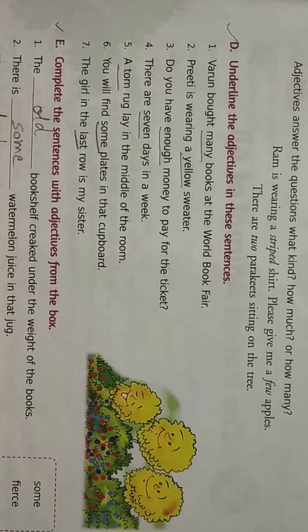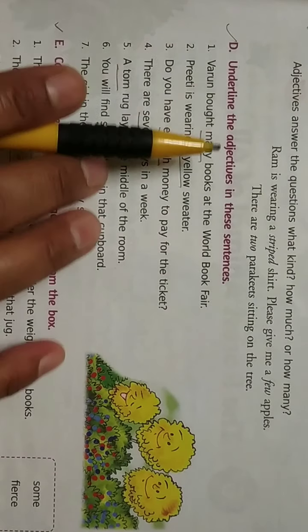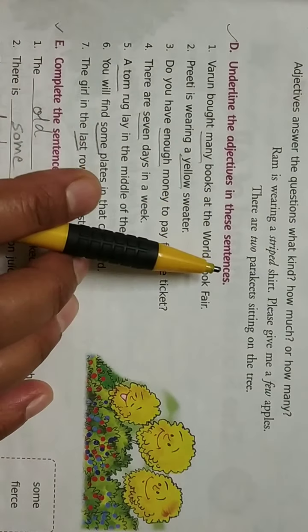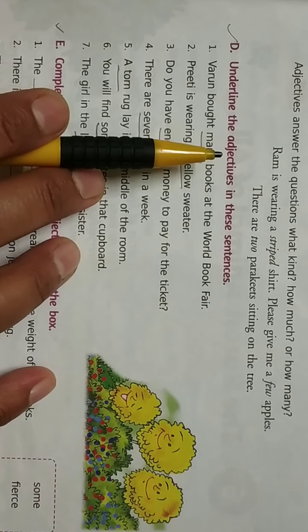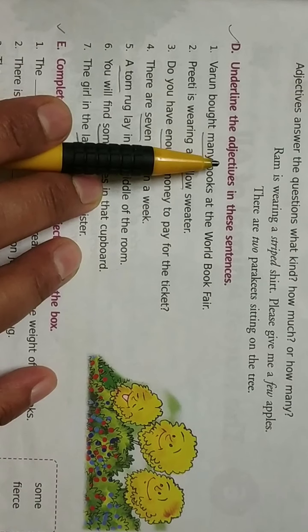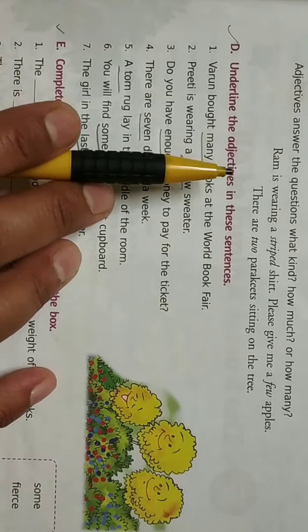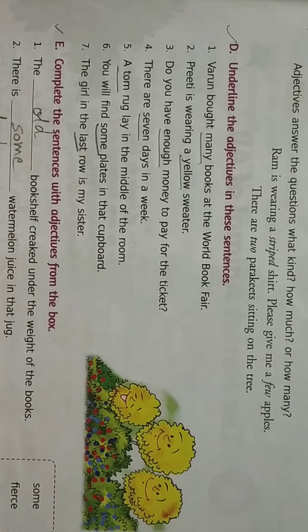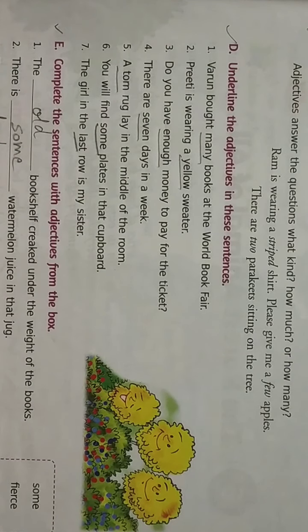Your D question on page number 49 is underline the adjectives in these sentences. Now what do you mean by adjectives? You have already learned that words that describe or qualify nouns are called adjectives. Numbers and names of colors are also adjectives.